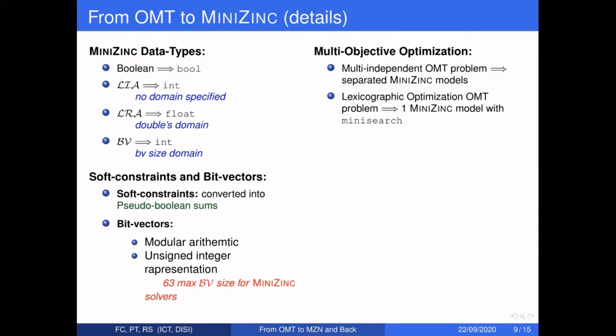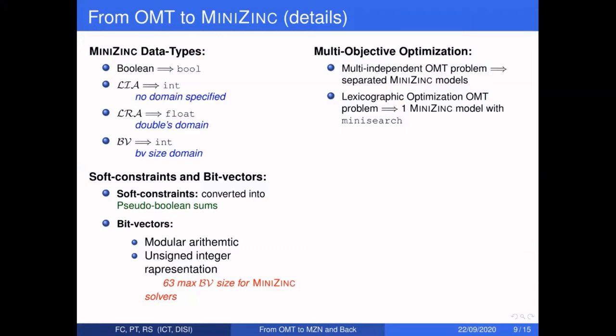Multi-objective OMT problems are translated with separate MiniZinc files for multi-independent problems, and we use MiniSearch to deal with lexicographic optimization, producing a single MiniZinc file as output.